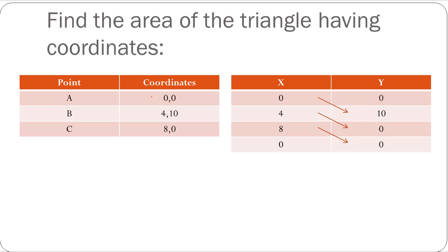All you have to do is write down the x and y coordinate of A, which is (0, 0), then the x and y coordinate of B, which is (4, 10), then x and y coordinate of C, which is (8, 0), and then you again repeat the x and y coordinate of the first point A, which is (0, 0).